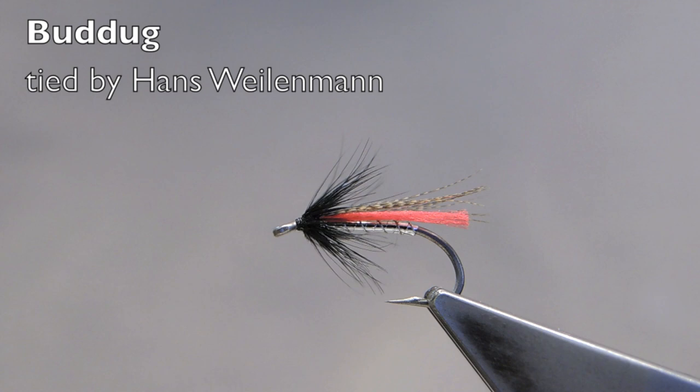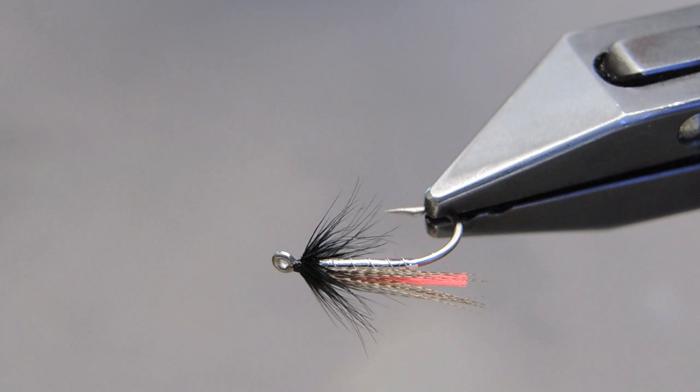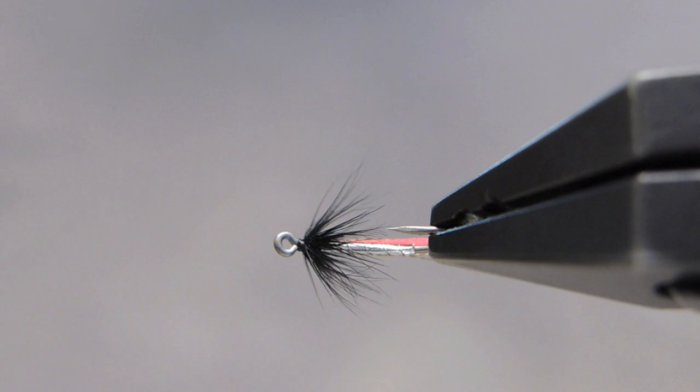The Biddick is a lightly dressed sea trout fly. It combines the proven combination of colors: black, silver, and red.